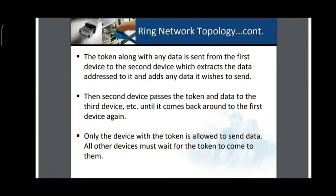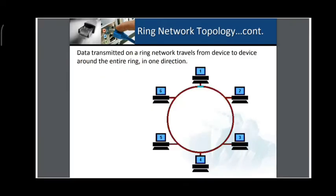Only the device with the token is allowed to send data; all other devices must wait for the token to come to them. In the clockwise model, if computer number one has to communicate to computer number three, it must communicate through computer number two first. This is the clockwise, unidirectional ring topology.